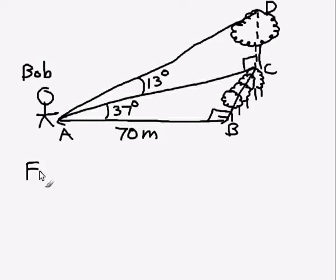Now, what we're interested in is finding the height of the tree. So we really need to write some statement. The tree height, if you look at the labels, is the length C, D. So I've written that down. That's what we want to try and find out.